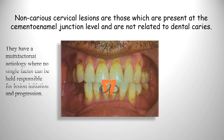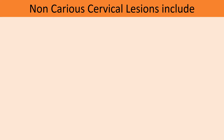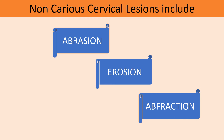Non-carious cervical lesions are those present at the cementoenamel junction level and are not related to dental caries. This area is a structural weakness where the thickness of enamel is very less, making it prone to breakdown. Their etiology is multifactorial — factors include occlusion, saliva, age, sex, diet, stress, fracture, trauma, and parafunctional habits. Non-carious cervical lesions include abrasion, erosion, and abfraction.